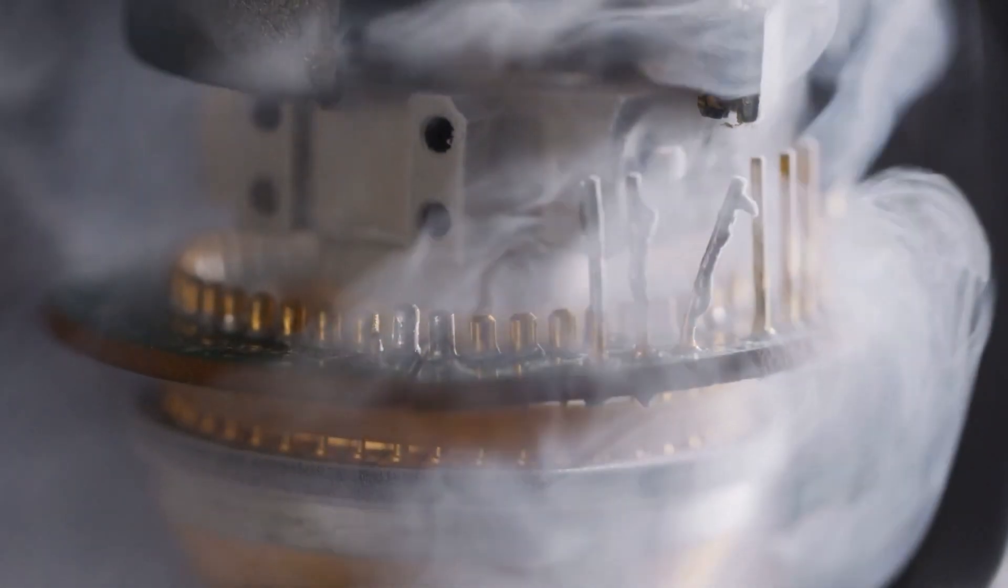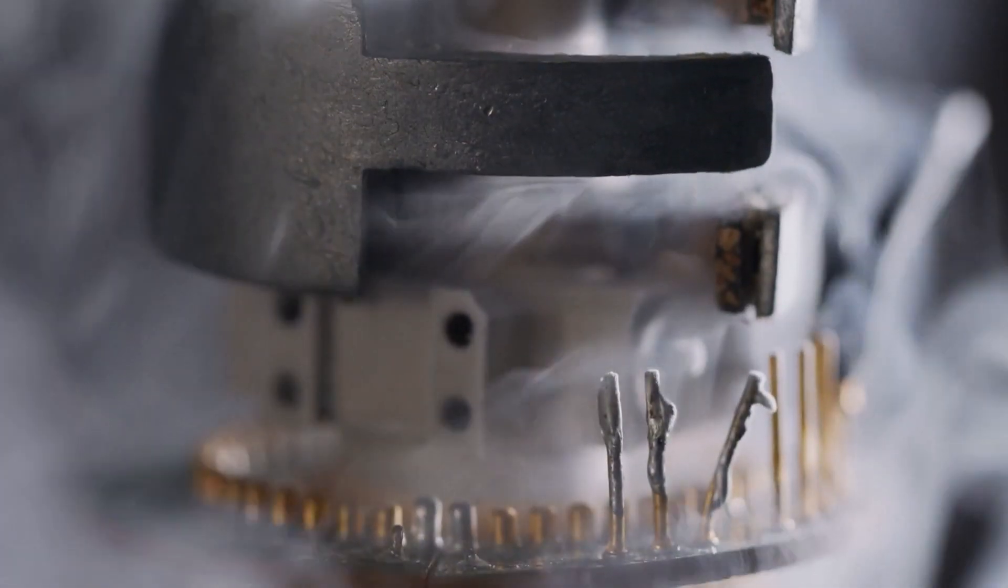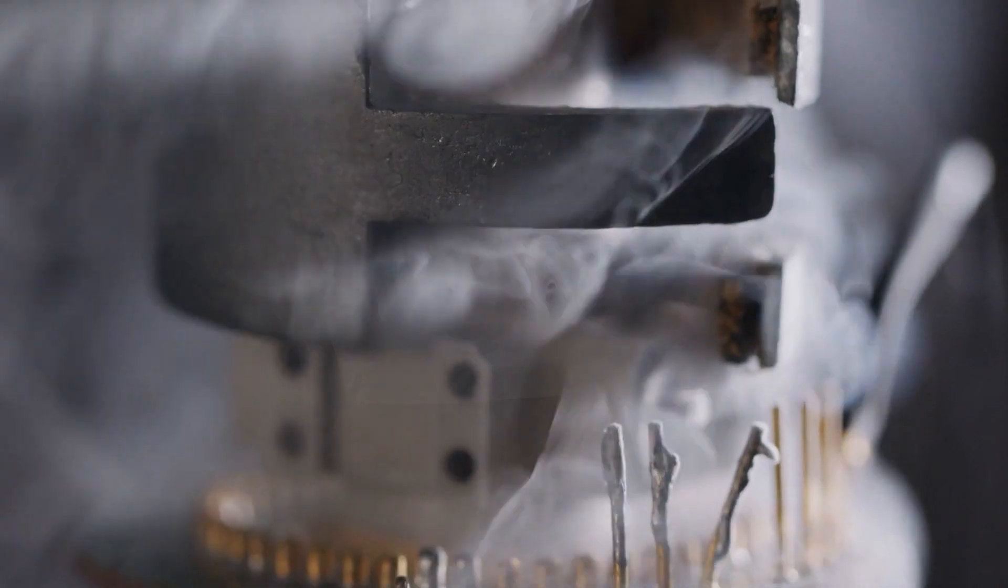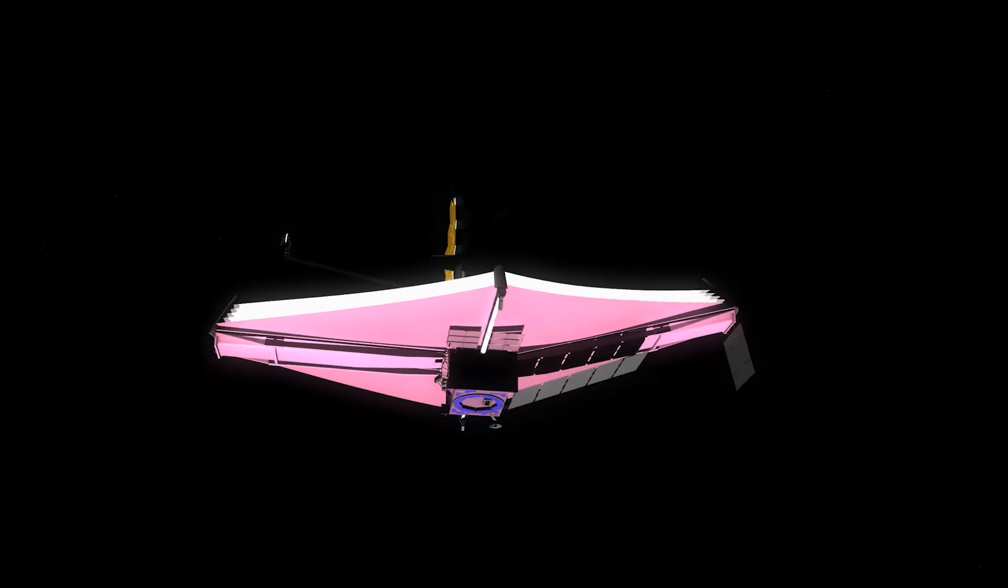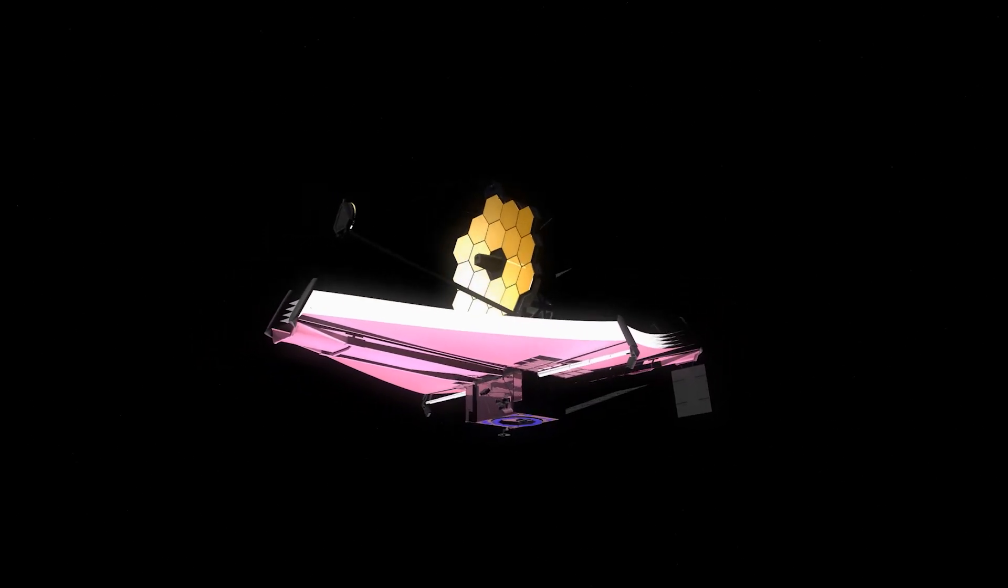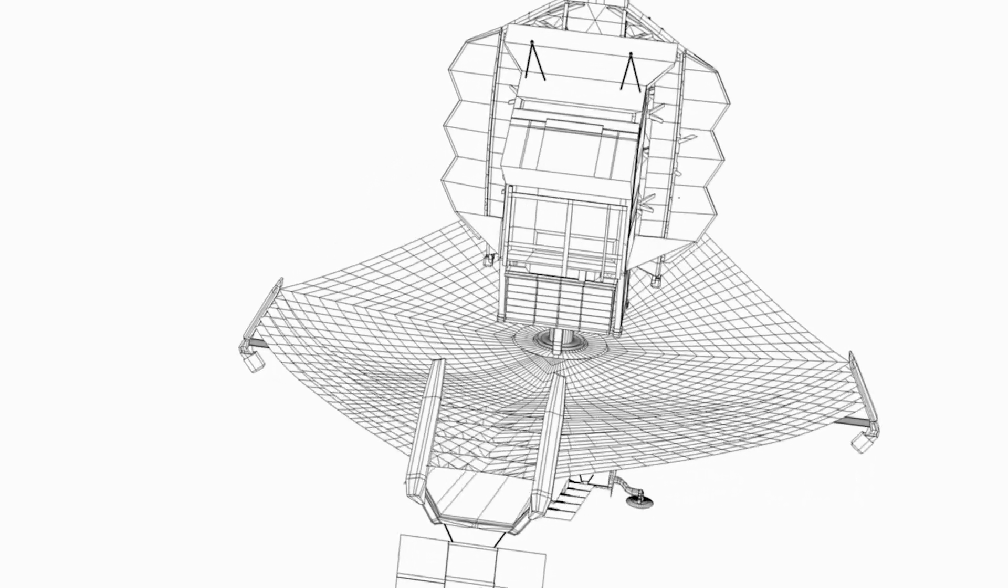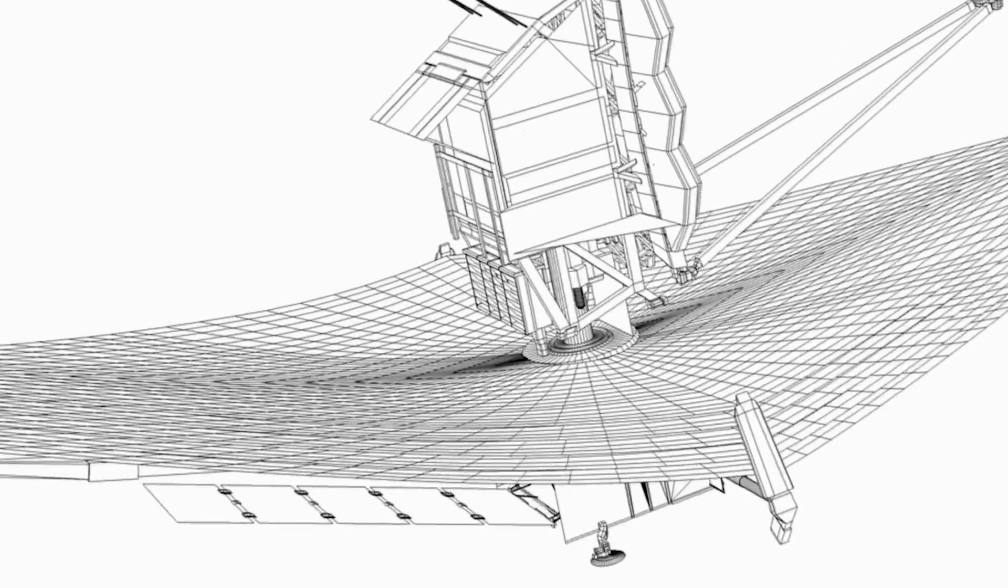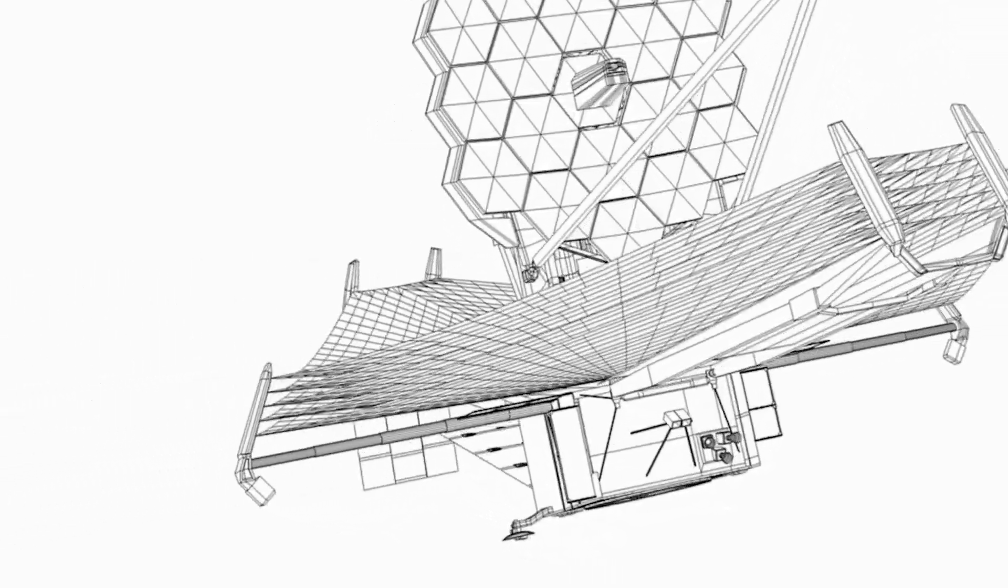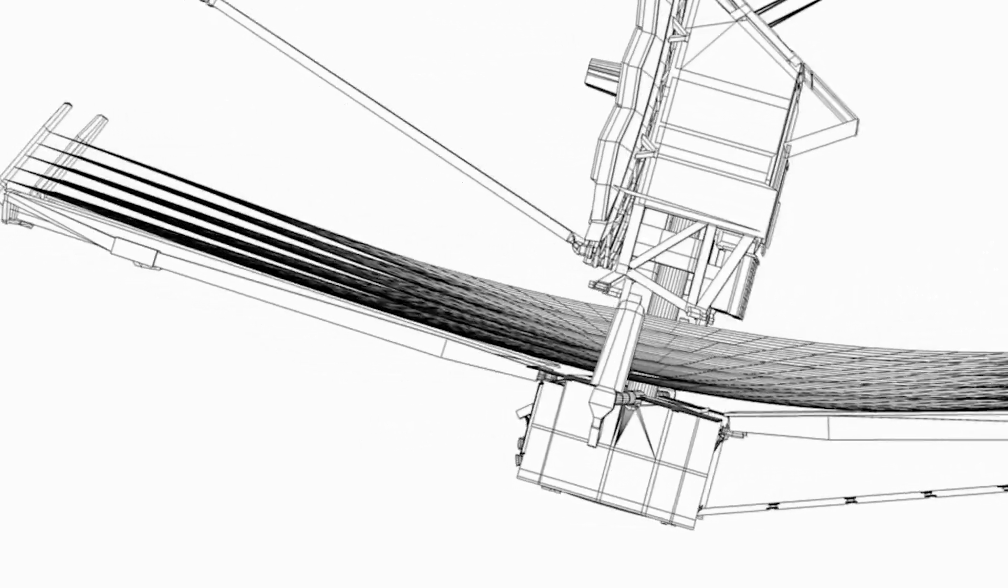If not, infrared light from the telescope itself would overwhelm its instruments. It therefore requires a large sun shield to block light and heat from the sun, Earth, and moon. The sun shield consists of five layers, each about as thin as a human hair. The layers are made out of a special super tough plastic called Kapton E, coated with aluminum on both sides and doped silicon on the sun-facing side in order to reflect the sun's heat back into space.